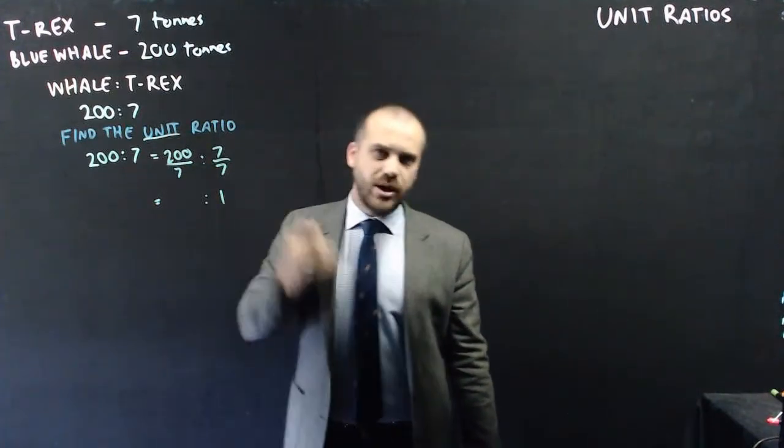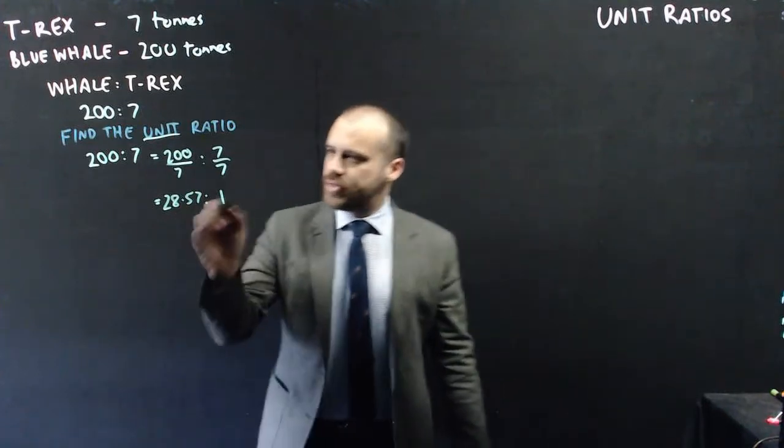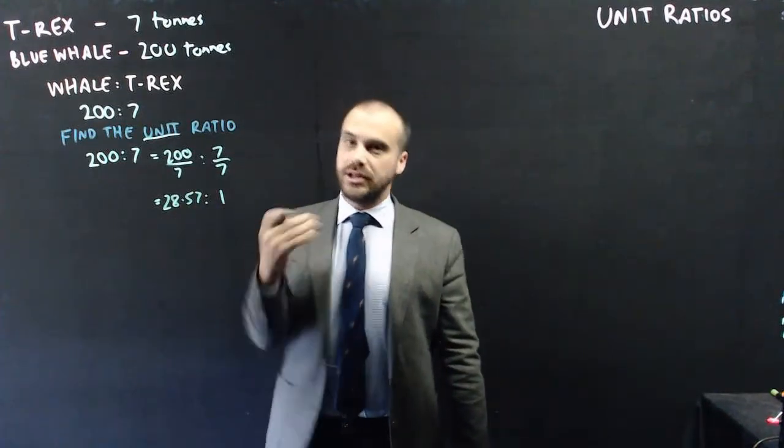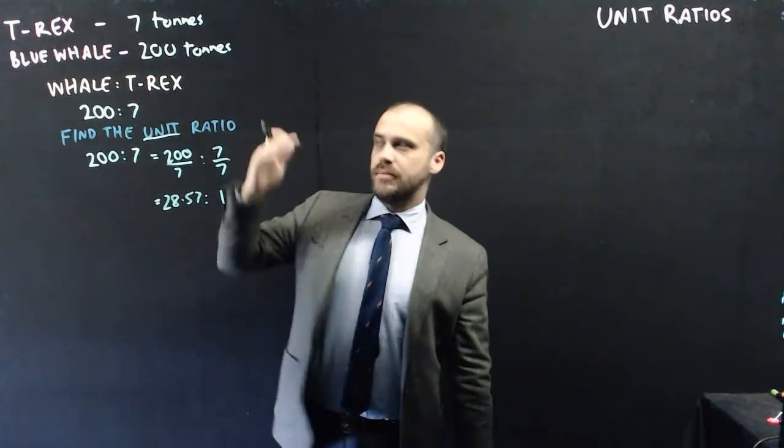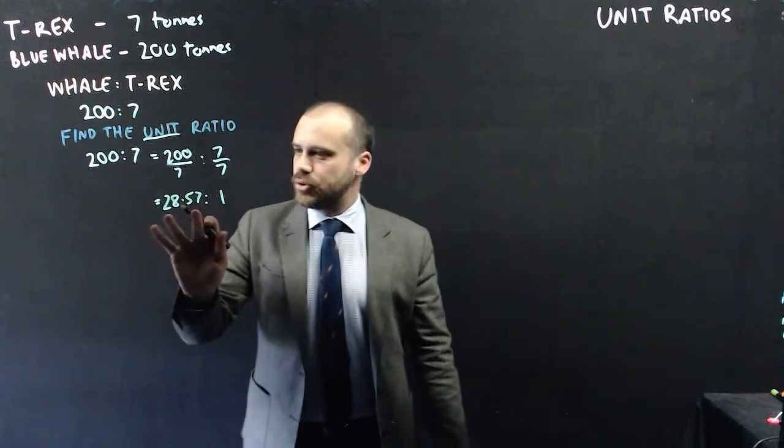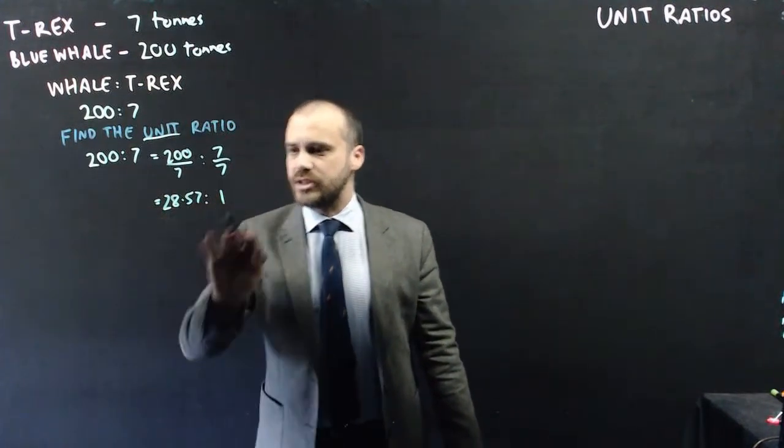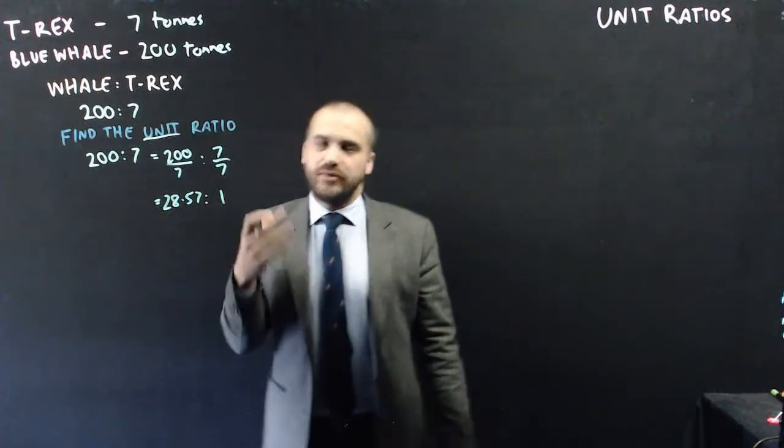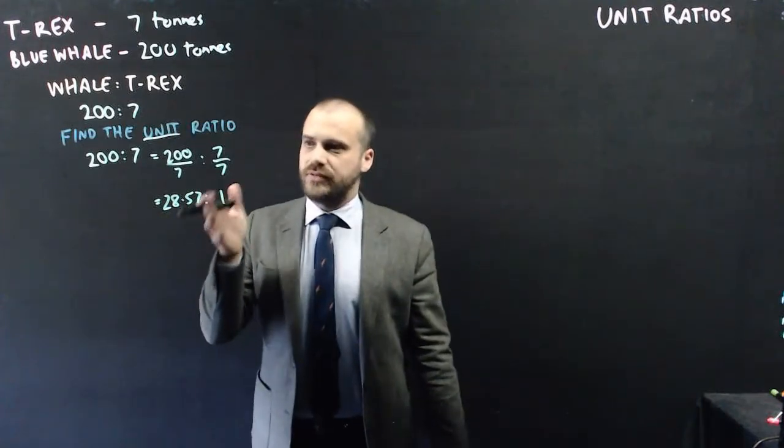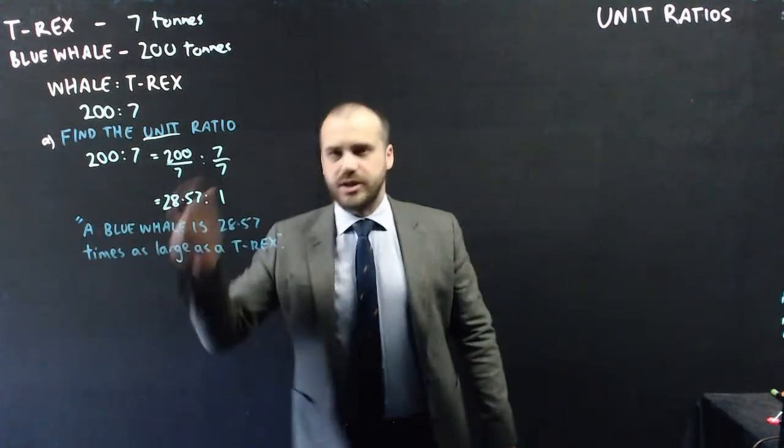200 over 7 might need a calculator. 28.57. Now this is a really useful ratio because it gives us a clear understanding of the relationship between a T-Rex and a blue whale. It says that a blue whale is 28.57 times as large as a T-Rex. You could fit 28.57 T-Rexes inside of a blue whale. So there's what that ratio says.